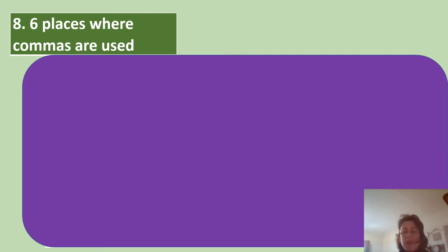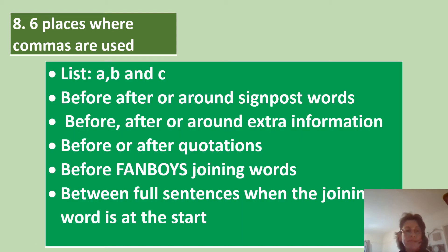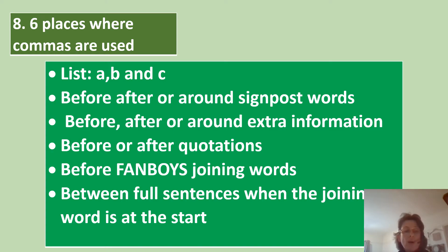So which are the six places where commas are used? Stop the video while you have a think, and then the answer will be revealed. So it's: in lists — A, B and C. Before, after or around signpost words like 'however' or 'therefore'. Before, after or around extra information which does not stand on its own because it's not a full sentence. Before or after quotations. Before fanboys joining words, which you will have learnt about in the other video. Between full sentences when the joining word is at the start, such as 'if', which you will have seen in the previous video.